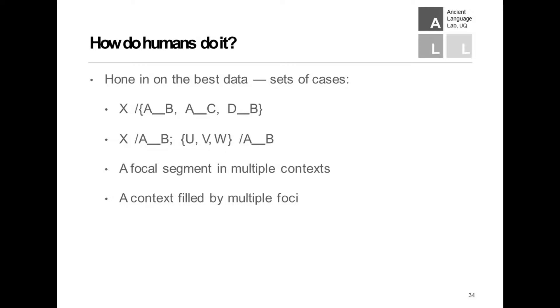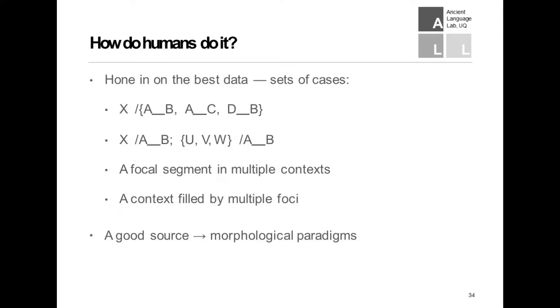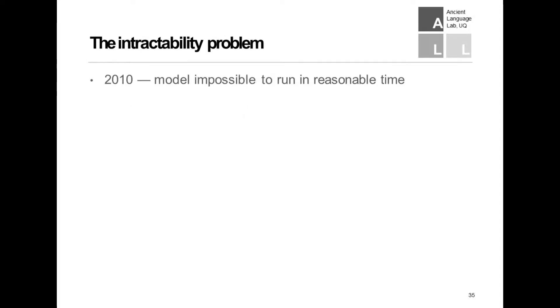This can genuinely make you wonder how we clever humans do it — because we overcome this problem. One thing we certainly do is we have good ways of honing in on the best data. We look at a focal segment in multiple contexts, or a context containing multiple foci. A really good source of information of that kind — and this is where my morphologist comes out — is morphological paradigms. They have lots of this kind of stuff: morphological paradigms are filled with the same item in different contexts, and the same context containing different items in an almost systematic way. In reality, humans who do the comparative method will look at morphological paradigms if there are some available, in search of this kind of information.